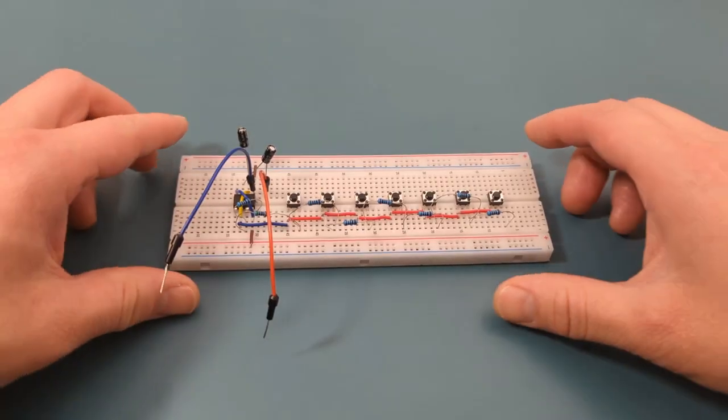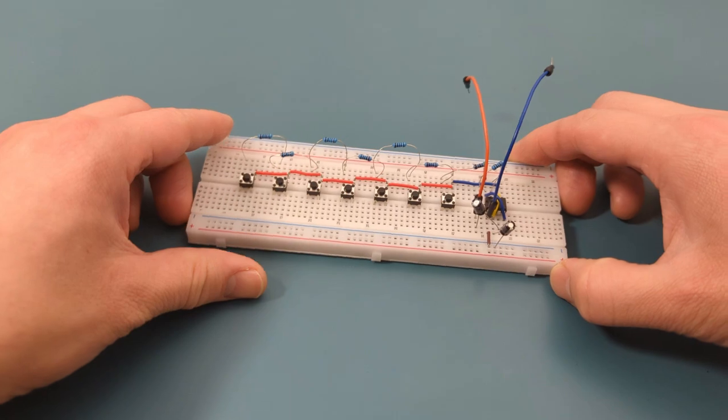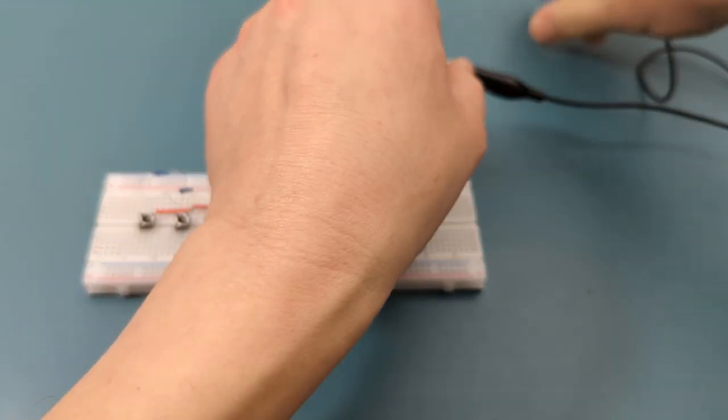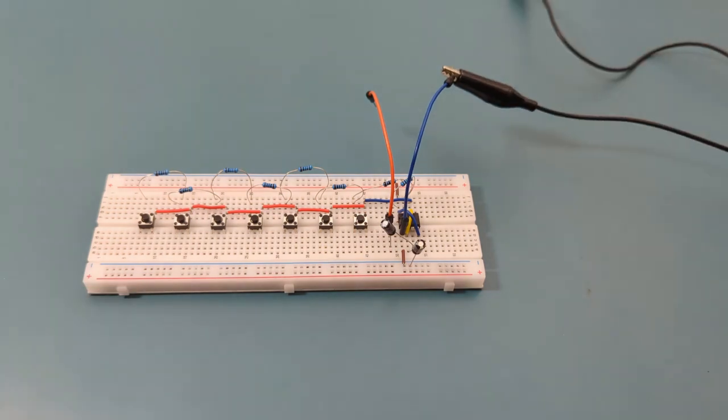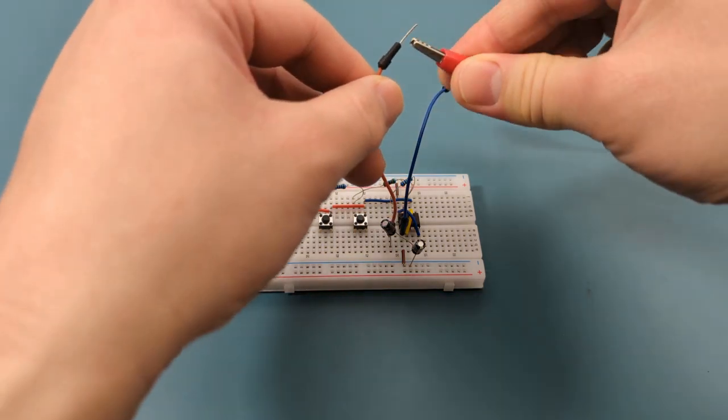Turn the breadboard to the other side. Attach a black alligator clip to the jumper wire that is connected to pin 1, or ground. Attach a red alligator clip to the other jumper wire.